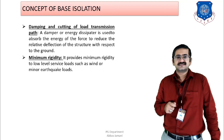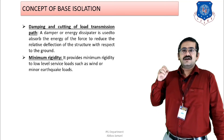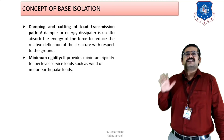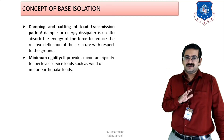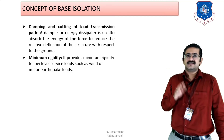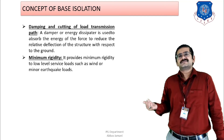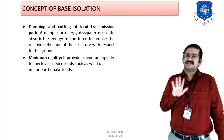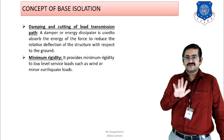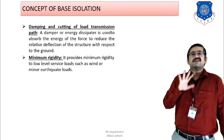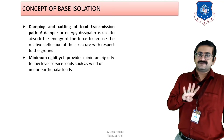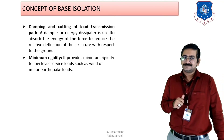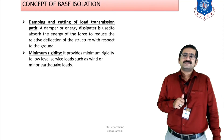The fourth parameter is minimum rigidity. A minimum amount of rigidity is also required — if there is a lateral force with a base shear less than that of an actual earthquake, such as due to wind or a minor earthquake, the structure should have minimum rigidity to withstand it. Considering all four aspects, the base isolation system is designed.